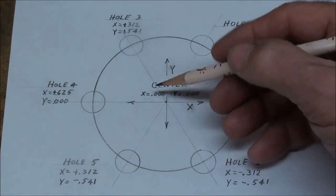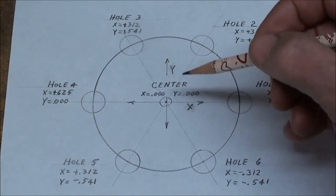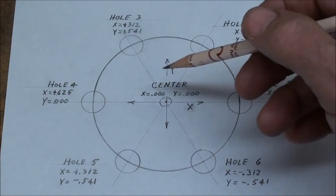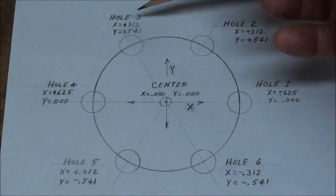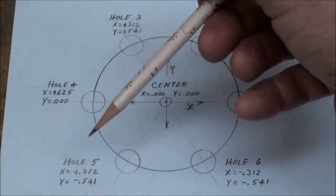Remember that the center here, and there's a hole here, is zero for the X and zero for the Y. Now for hole one, we're going to move it over on the X axis to a minus .625, and the Y is left alone at zero. For hole two, the X axis will be set at minus .312, and the Y at a plus .541, and so on, working our way around.